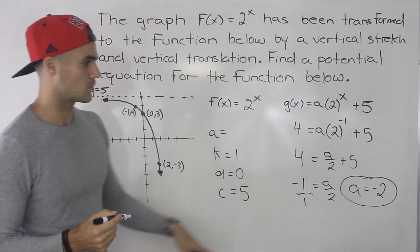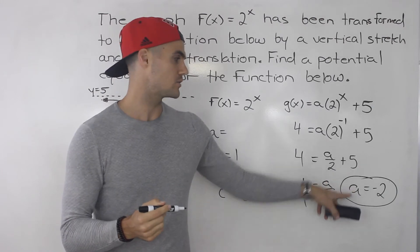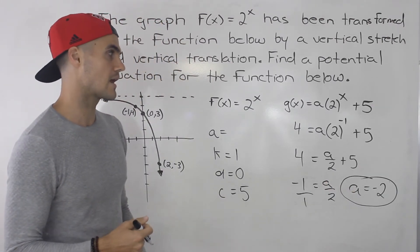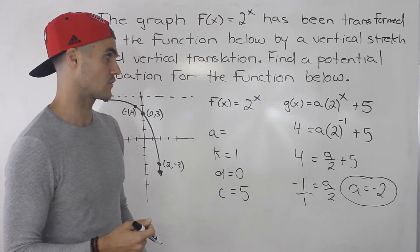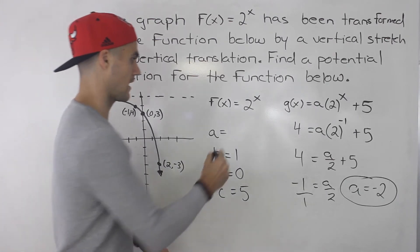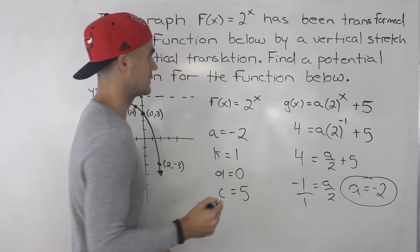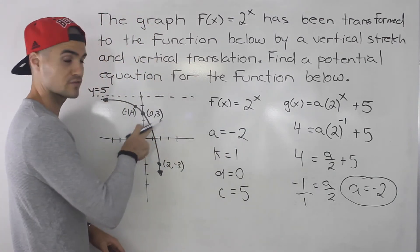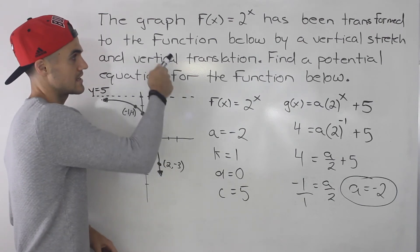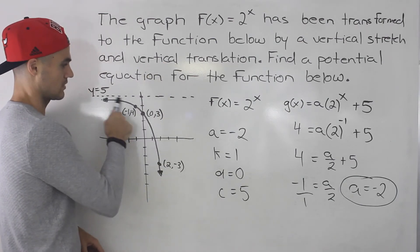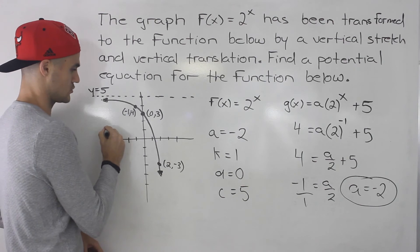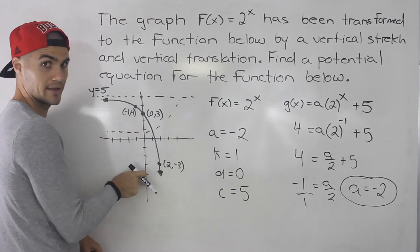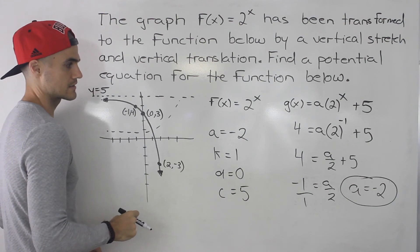Okay, so it seems like no matter which point we're picking, we're always going to be getting that a value of -2. So we could be pretty confident that that is the correct answer for a. So the a value is -2, which means there's a vertical stretch by a factor of 2. It also means it's reflected in the x-axis. Notice they didn't state that, but you could tell here that 2 to the power of x usually looks like this. So you could tell it's been reflected in the x-axis.